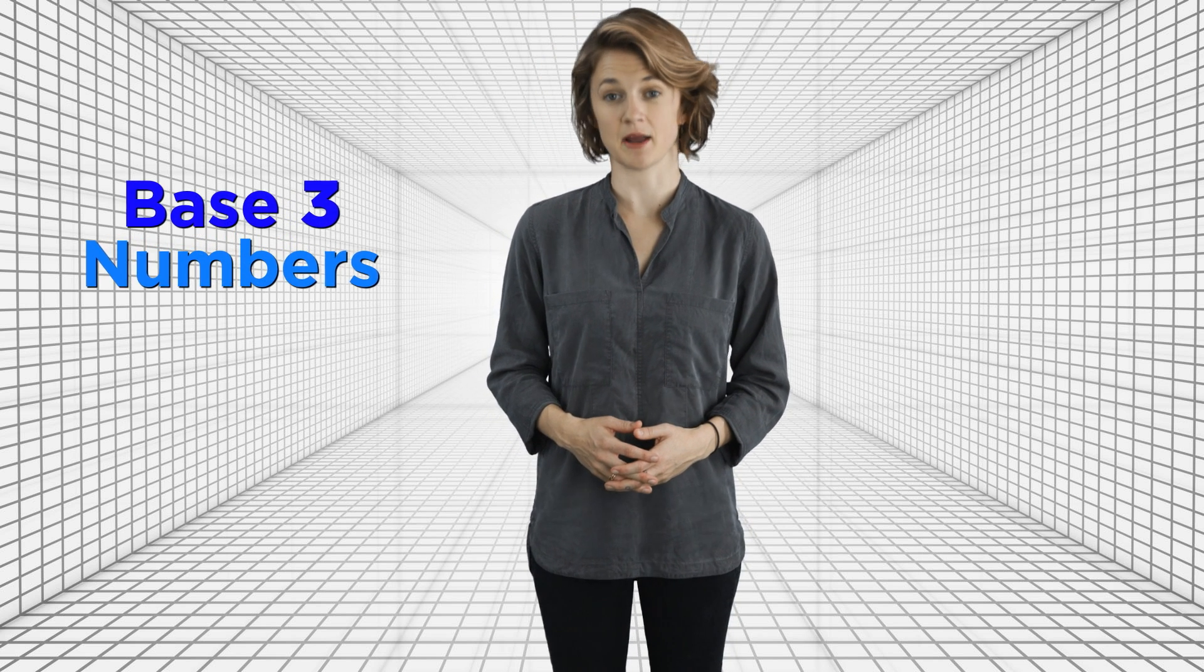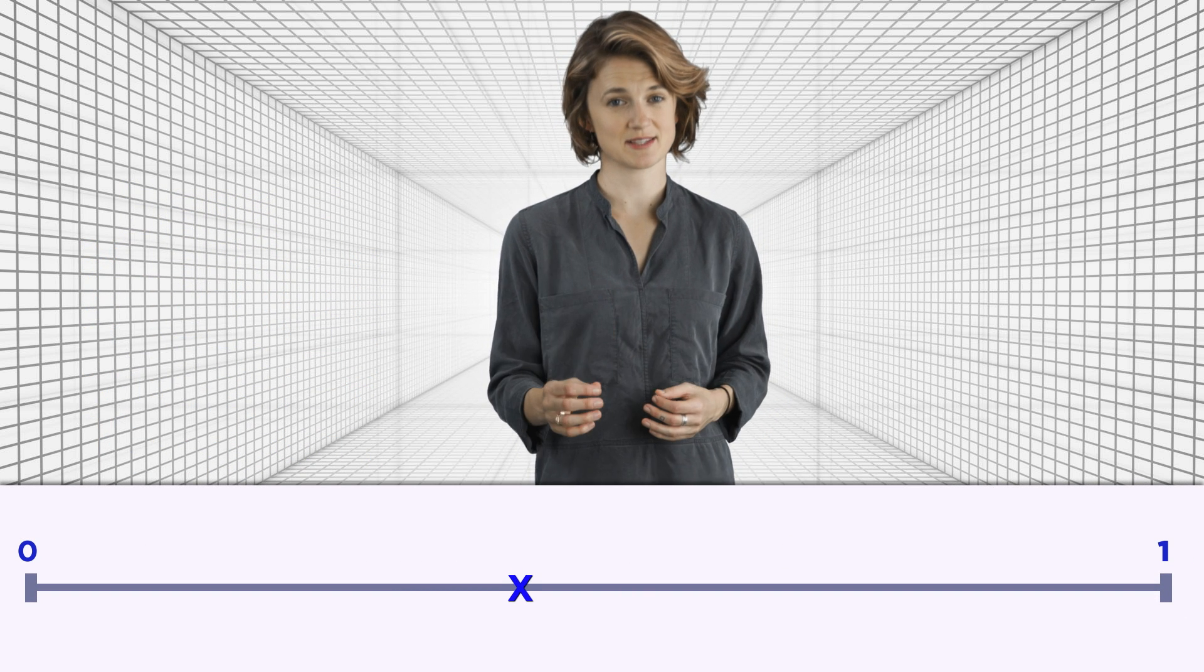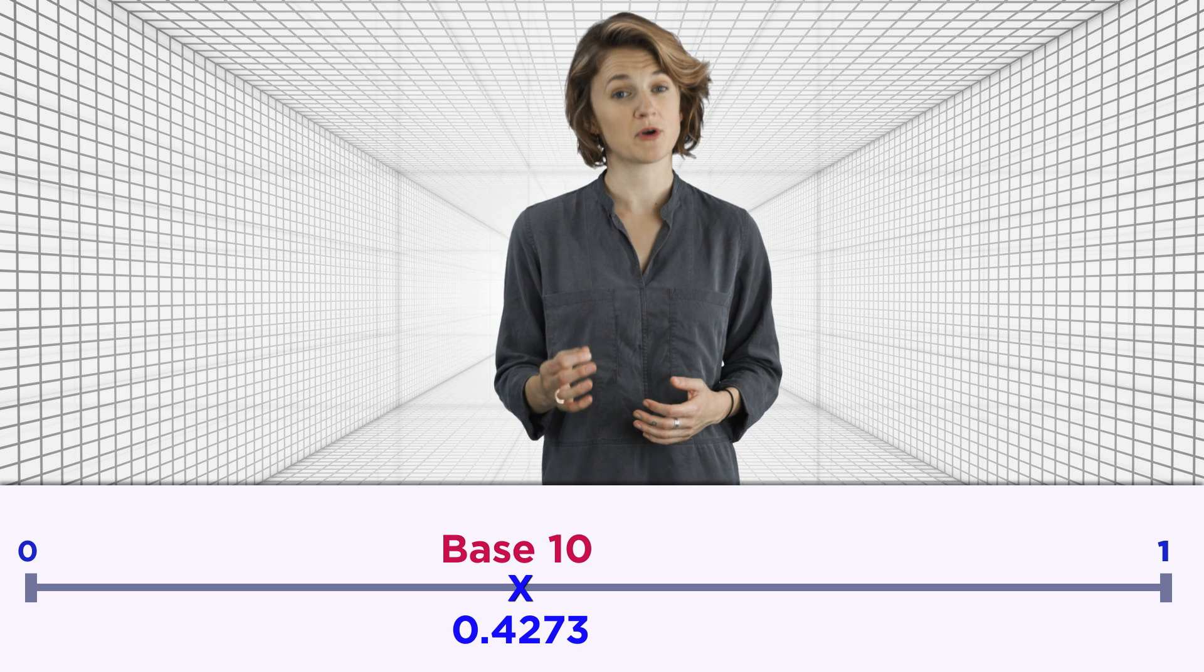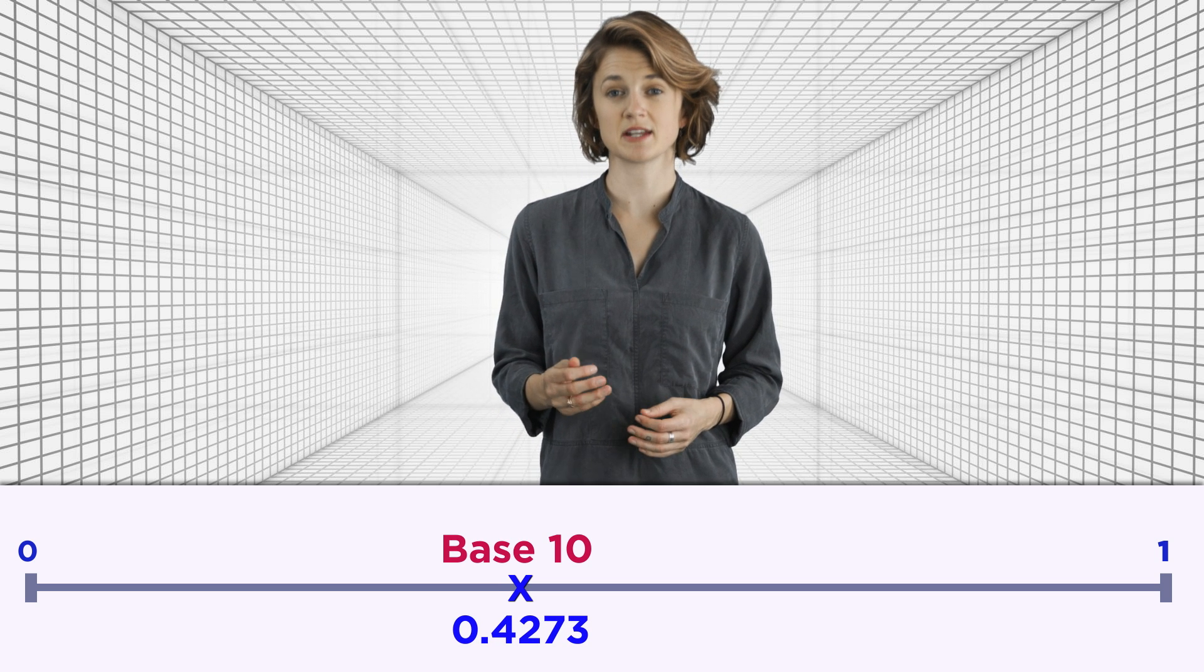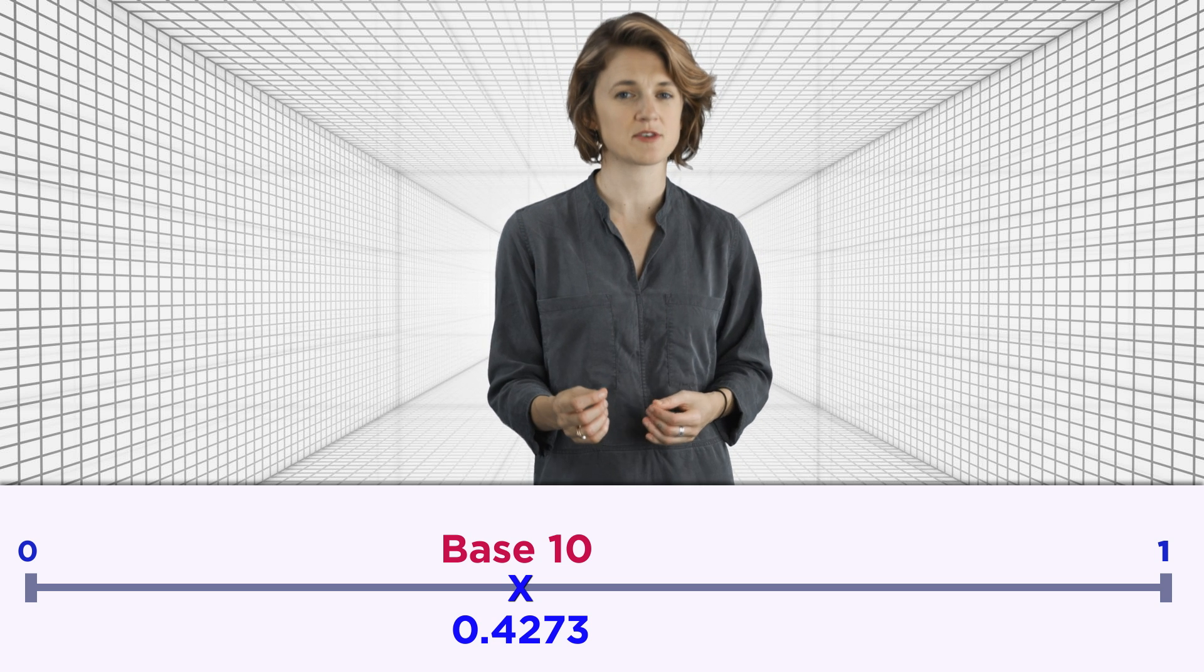For this construction, we'll have to use base 3 numbers. Pick a point between 0 and 1 and mark it with an X. In base 10, we'd label this point 0.4273, which means it has 4 tenths plus 2 hundredths plus 7 thousandths plus 3 ten thousandths. It's also a recipe for how to zoom in on it.